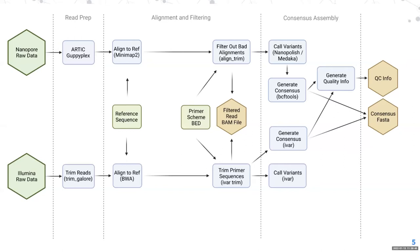There is a slight difference in how consensus sequences are generated, but the end result is a consensus FASTA representative of the sample, quality control info such as coverage and how many amplicons dropped out, as well as a BAM file containing your reads aligned to the reference. The main databases that accept those are the UK Climb COVID server and ENA, which also accepts read files.